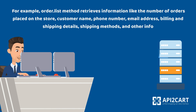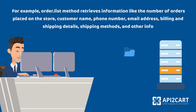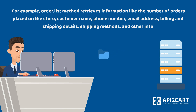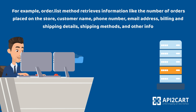For example, the order.list method retrieves information like the number of orders placed on the store, customer name, phone number, email address, billing and shipping details, shipping methods, and other info.